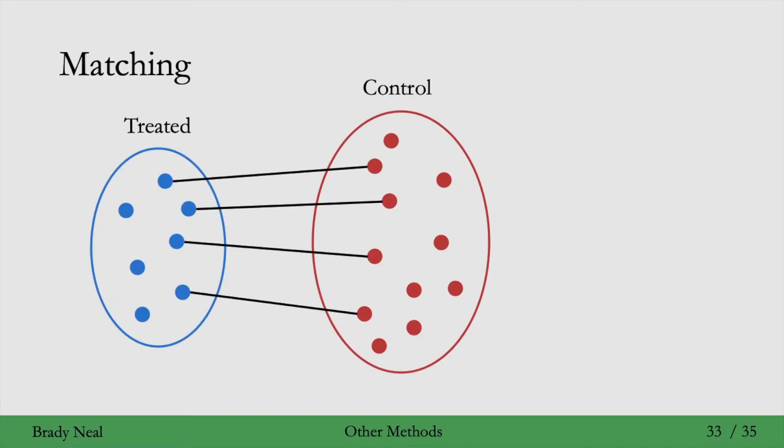The next other popular method is known as matching. In matching, we take individuals in the treatment group and match them to similar individuals in the control group, where they're similar in the sense that they have roughly the same covariates, at least the covariates that we need to adjust for. So here, this blue dot can match to this red one, and same with these other three.